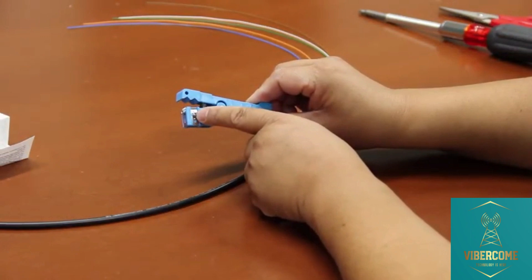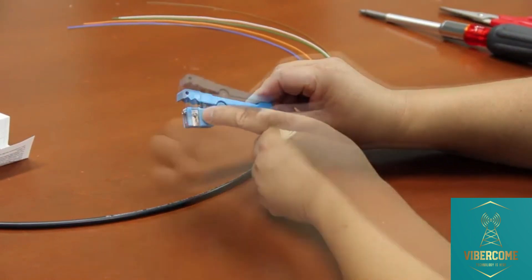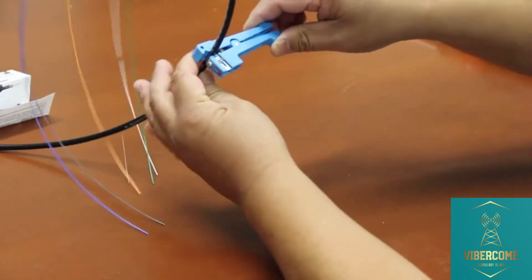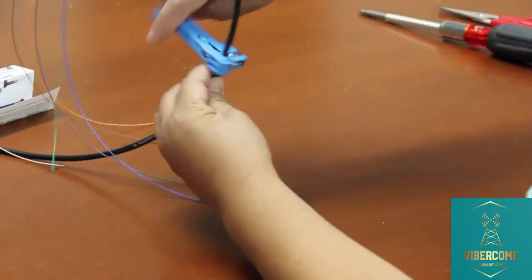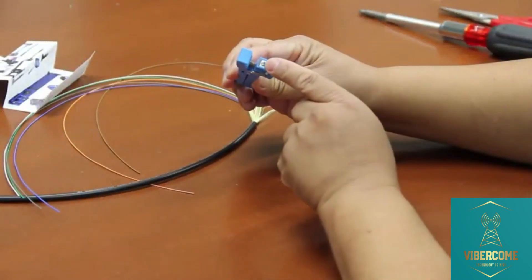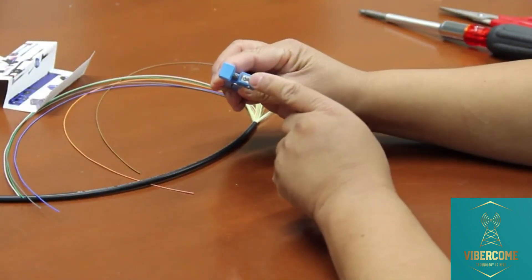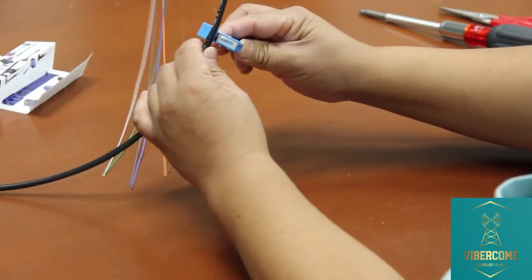It comes with two notches. One notch is for the ring cut, and the other notch is for the longitudinal cut along the buffer tube length.